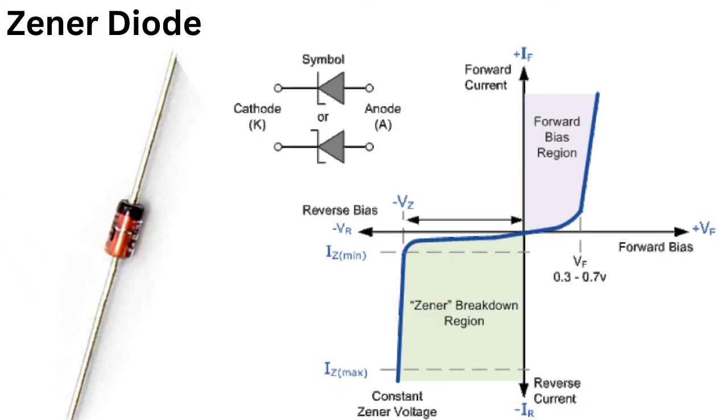And the characteristics of a Zener diode can be represented by a graph, with the voltage across the diode on the x-axis and the current flowing through it on the y-axis.